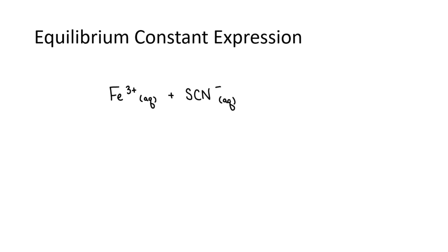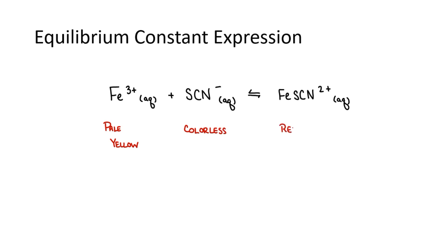In this lab, we will be determining the equilibrium constant for the following reaction. Iron 3-ion and thiocyanate combine to form a special type of complex ion having the formula FeSCN²⁺. The super important characteristic of this complex ion is that it is red in color.